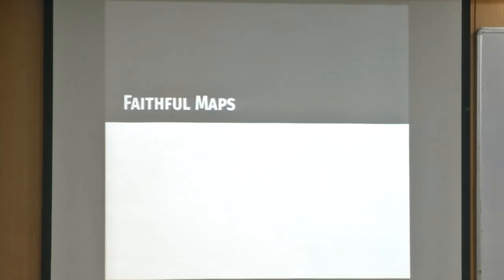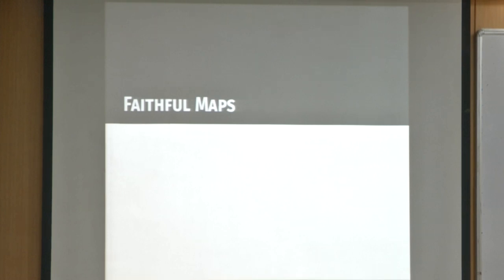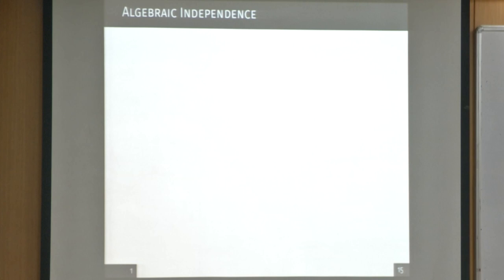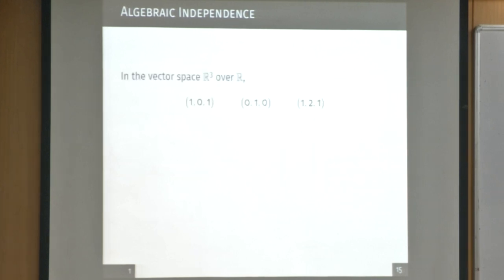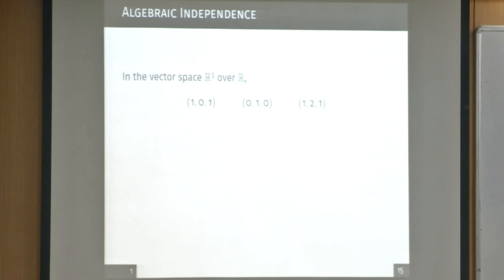The first question is: what are faithful maps? Before we go into that definition, we need to look at the notion of algebraic independence. Before algebraic independence, let us look at linear spaces. Suppose you are in the vector space R³ over some field R. Suppose you are given these 3 vectors — they are linearly dependent, because there is a linear combination of these vectors which gives the 0 vector.